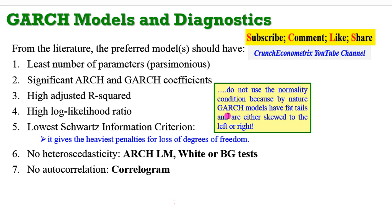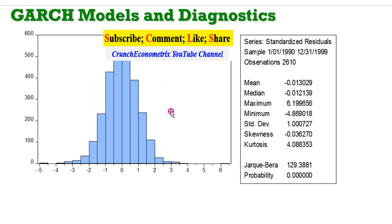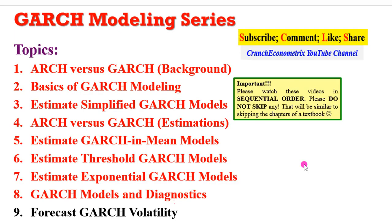One thing I omitted in my discussion of diagnostics: please do not use the normality condition to gauge your diagnostics. By nature, GARCH models have fat tails and are either skewed to the left or right. Do not conduct a normality test expecting your Jarque-Bera statistic to be not significant — that is not possible. Normality test is not considered when performing diagnostics for GARCH. The histogram for the GARCH(1,1) model error distribution shows fat tails, clearly leptokurtic, with a statistically significant Jarque-Bera statistic. No serial correlation is confirmed when p-values of Q-statistics are not significant.